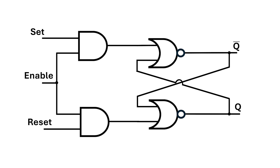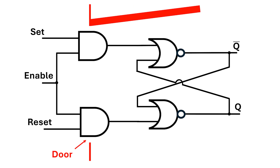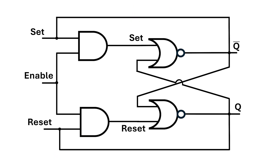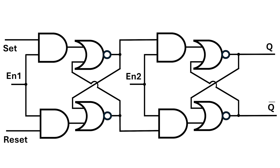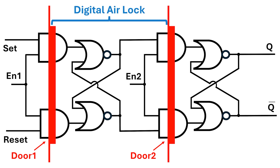Let's go back to this SR latch — called a gated SR latch because the AND gates act like a barrier to letting the set and reset signals through. We can still get a race around condition when enable is asserted. What I'm going to do now is put two of these gated SR latches together, where the outputs from the first one directly feed into the inputs of the second one. Overall we have four inputs: set, reset, and the two enable signals. I now have these two barriers, or doors, controlled by the enable signals, and the space in between acts a bit like a digital airlock: outside on the left, door, digital airlock, door, inside on the right.